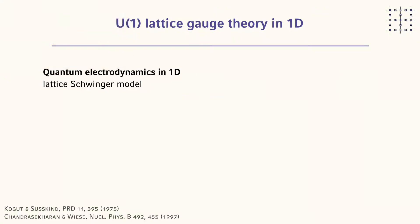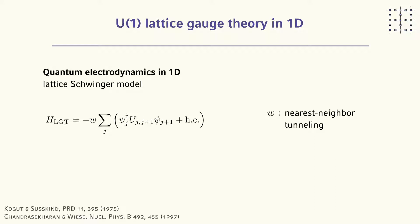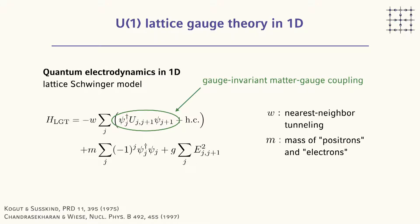Usually we work with global symmetries — global particle number conservation or global magnetization — but these local symmetries are something we typically do not control well. Now let me start with one concrete example more accessible to current experiments: the 1D lattice Schwinger model, which describes quantum electrodynamics. There is a first term resembling nearest-neighbor hopping with strength W, but with an additional link operator U — the parallel transporter — to ensure gauge invariance is preserved.